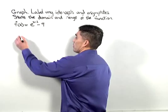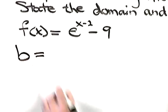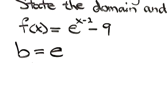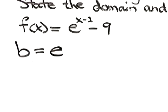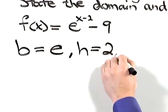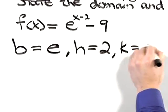Let's first label some information. The b value, or base of this exponential function, is e. Recalling that e is 2.71 approximately, the h value is 2, and the k value is negative 9.